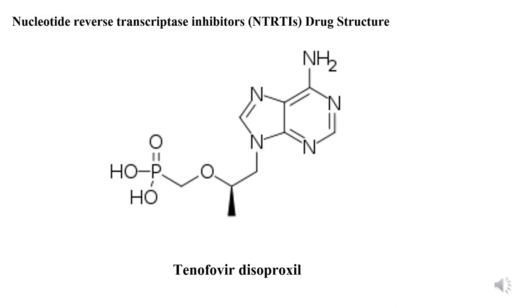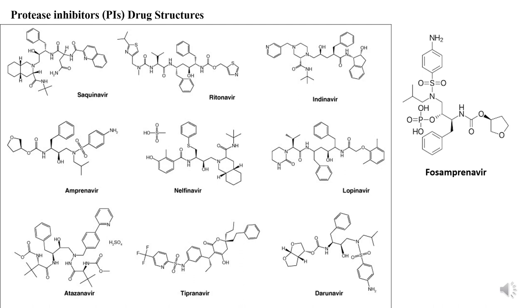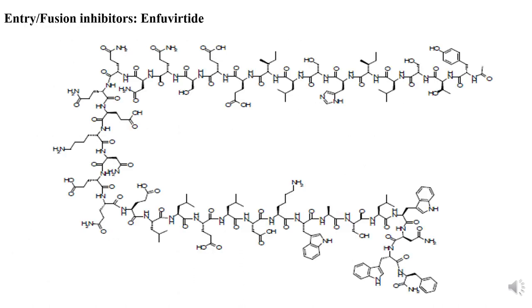These are the structures of drugs under the category of nucleotide reverse transcriptase inhibitors — example: tenofovir disoproxil. These are also the structures of drugs under the category of protease inhibitors, and the structures of drugs under the category of entry or fusion inhibitors.